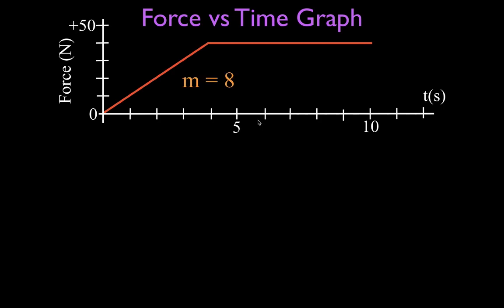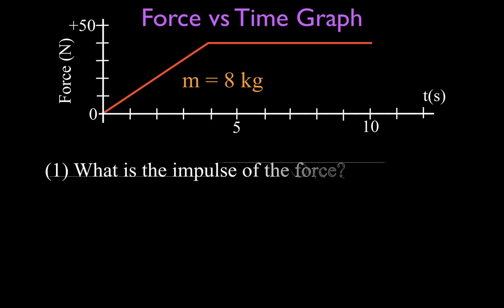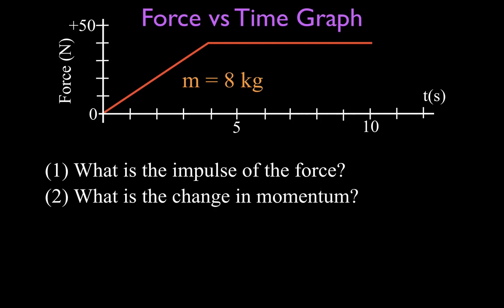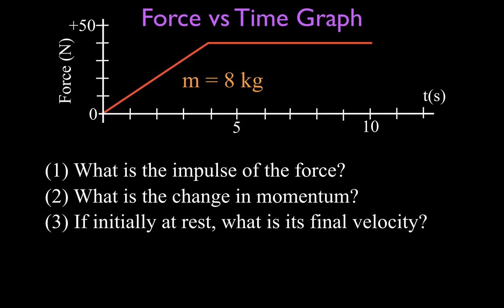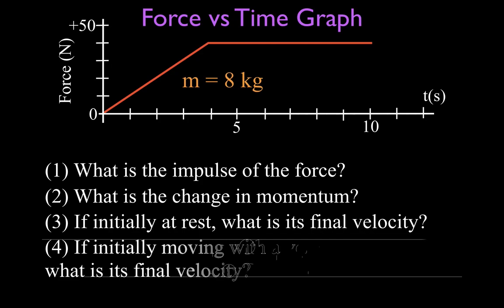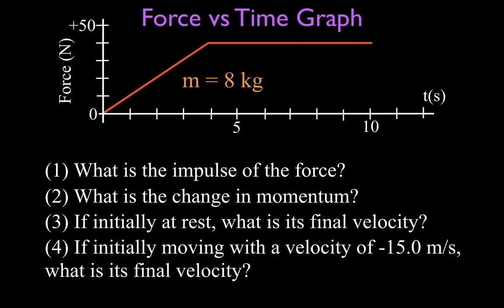That force is being applied to an object that has a mass of 8 kilograms. In this video we're going to do four things: determine the impulse of the force, determine the change in momentum of that 8 kilogram object, find its change in velocity if it was initially at rest, and find its final velocity if it was initially moving at minus 15 meters per second — that's 15 meters per second in the negative direction.